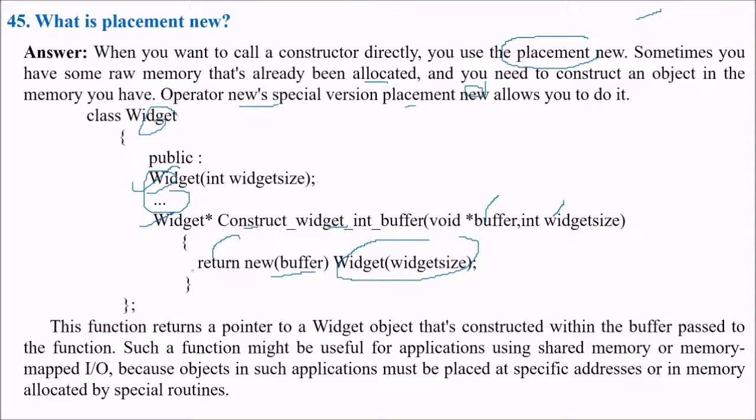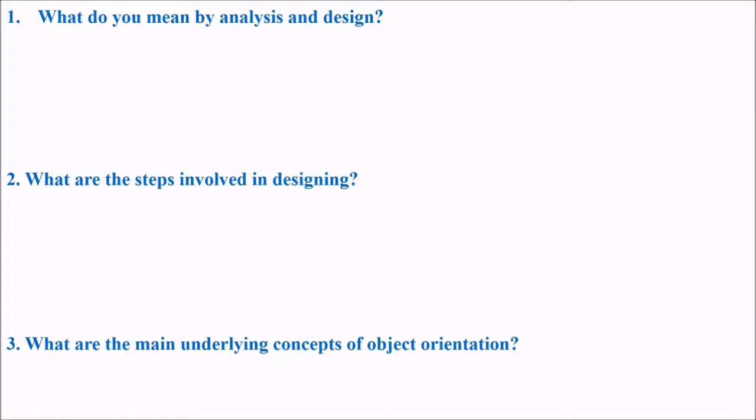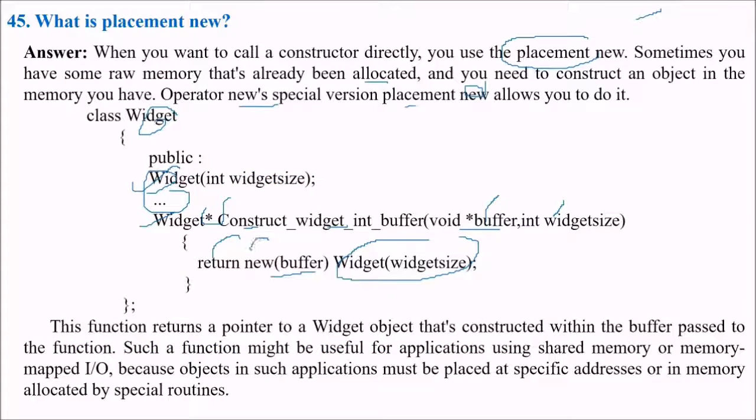This function returns a pointer, a pointer to a widget object that's constructed within the buffer passed to the function. Such a function might be useful for applications using shared memory or memory map input output because the objects in such applications must be placed at specific address or in memory allocated by special routines. Here we use the placement new. We have used this new.